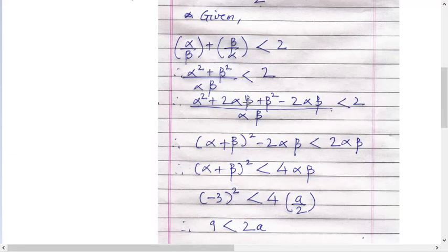Alpha square plus two alpha beta plus beta square minus two alpha beta upon alpha beta is less than two. Just add two alpha beta in between, so what is this now? A plus B the whole square, alpha plus beta the whole square.